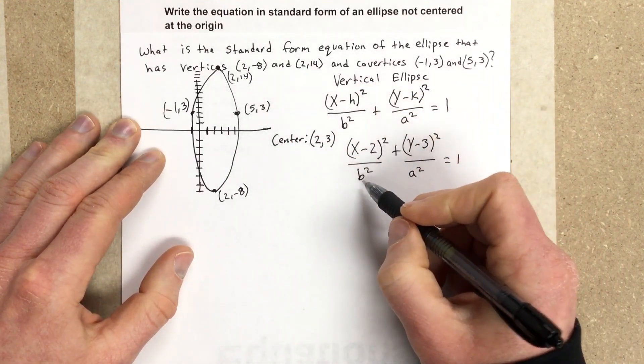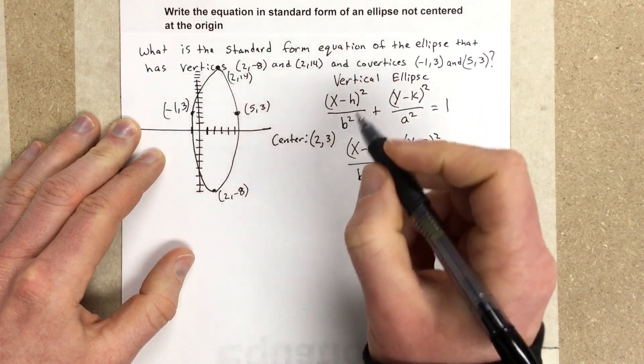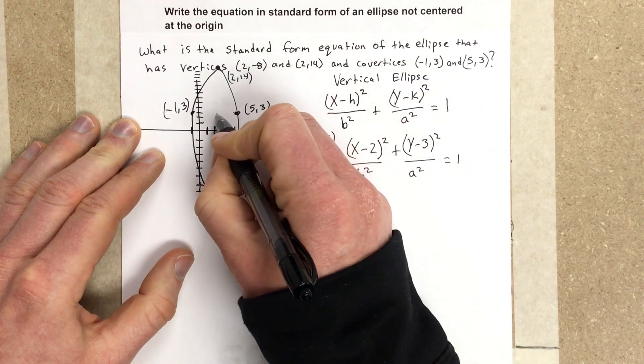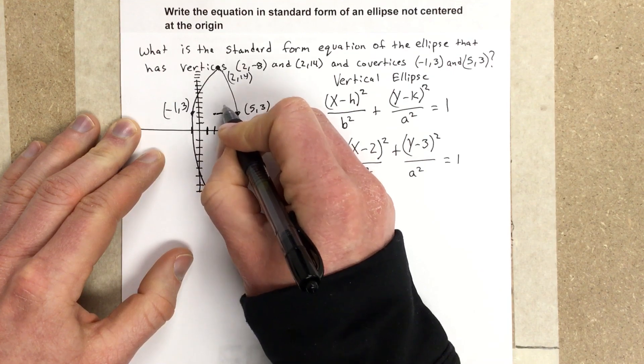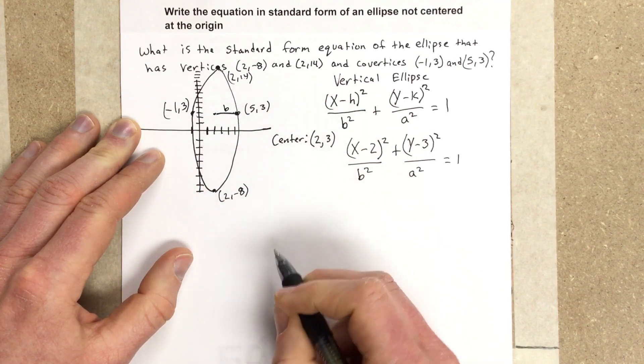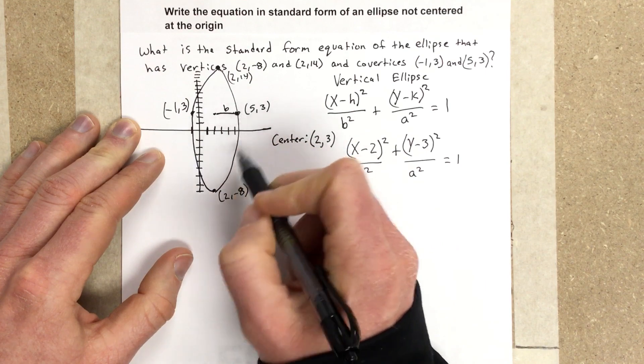So to find b, remember b is going to be the distance from the center. So the distance from the center, which is 1, 2, 1, 2, 3, to basically to one of the co-vertices.